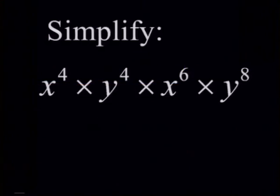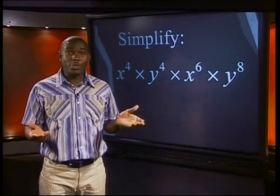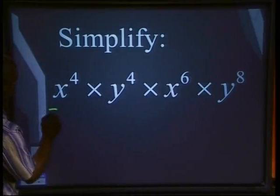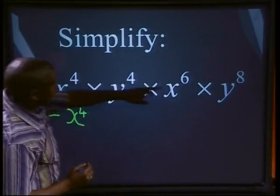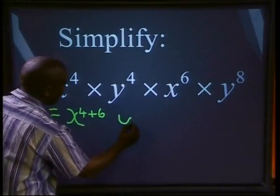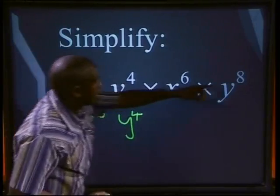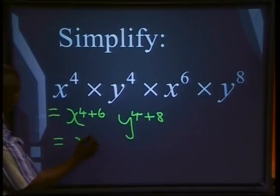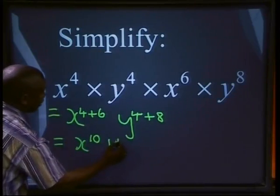Let's turn to Msani as he uses this law in some examples. Simplify: x to the power of 4 times y to the power of 4 times x to the power of 6 times y to the power of 8. All we need to do is add exponents with the same base. We have x to the power of 4 plus x to the power of 6, so we add 4 plus 6. And y to the power of 4 and y to the power of 8, so we add 4 plus 8. That gives us x to the power of 10, y to the power of 12.